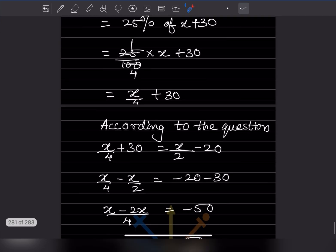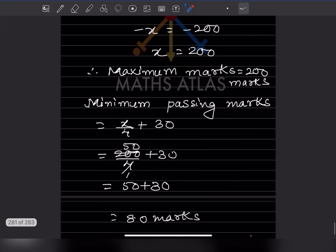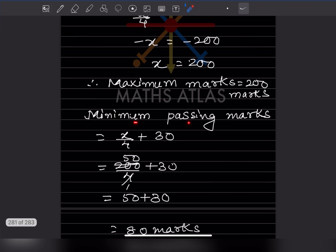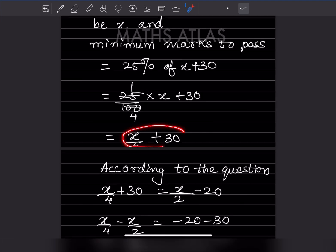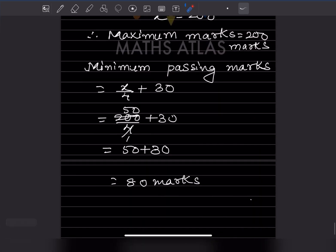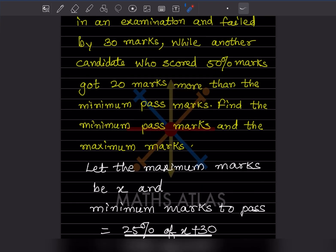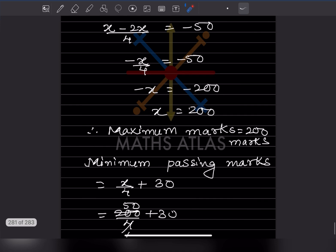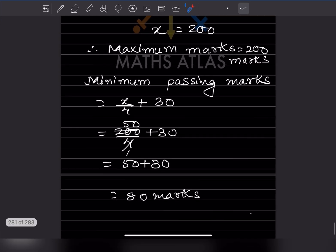Now finding minimum pass marks: minimum pass marks = x/4 + 30 = 200/4 + 30 = 50 + 30 = 80 marks. So the maximum marks is 200 and the minimum pass marks is 80. Do like and subscribe to my channel. We have completed today's work. Thank you.